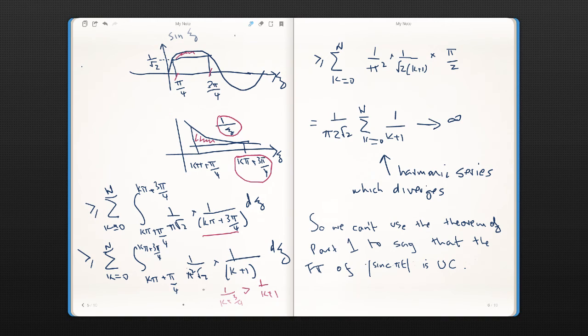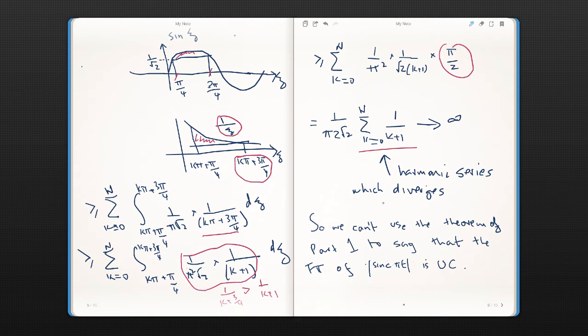And all we've got then is just, these are just constant numbers. These are just constant numbers here. Over an integral over this interval here, which has a width of π/2. That's where that comes from. And so we get, in the final analysis, we get this, which is the harmonic series, and that diverges.